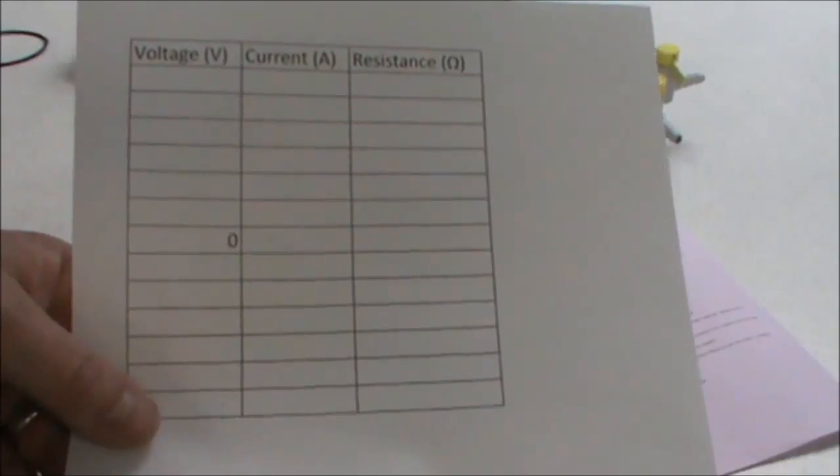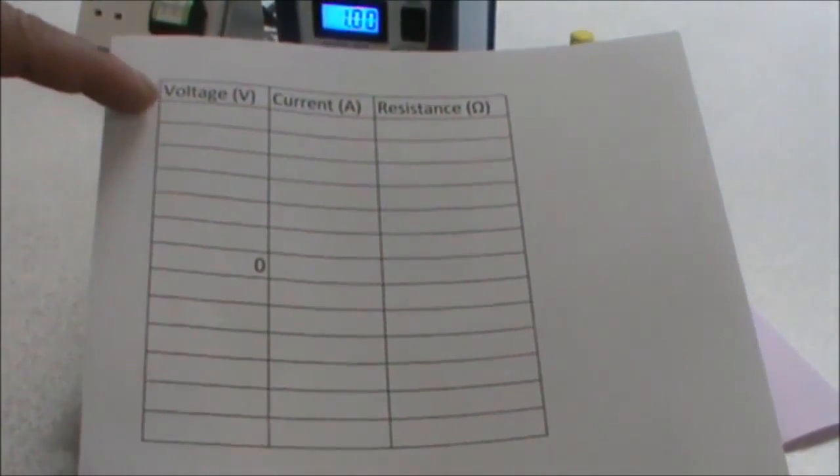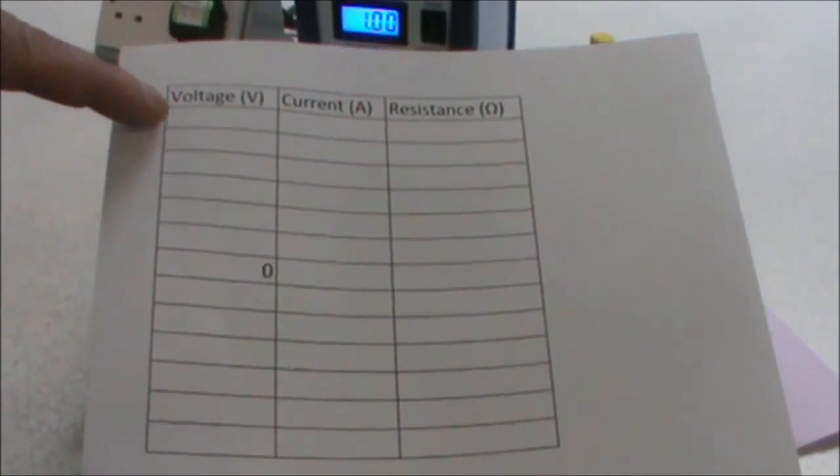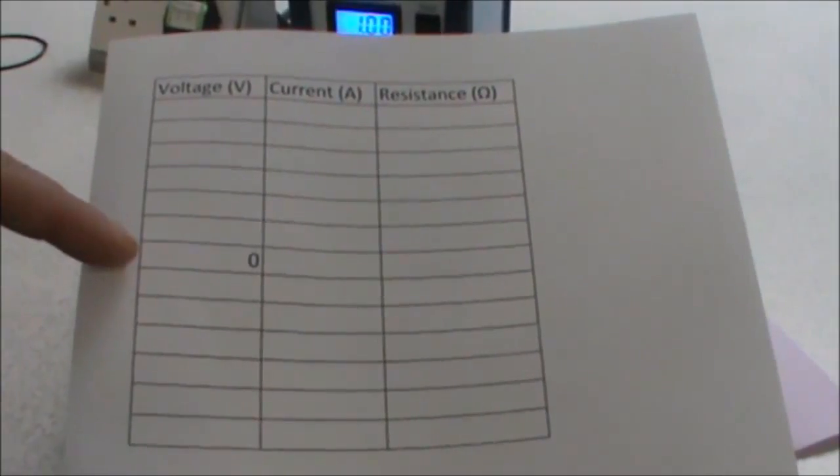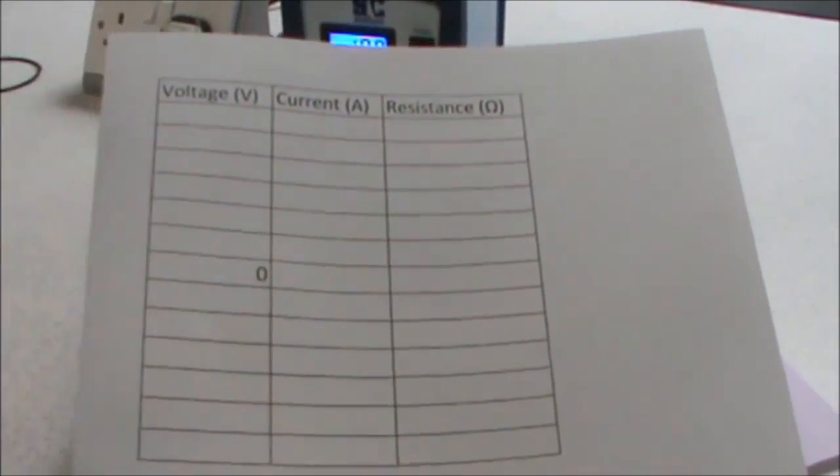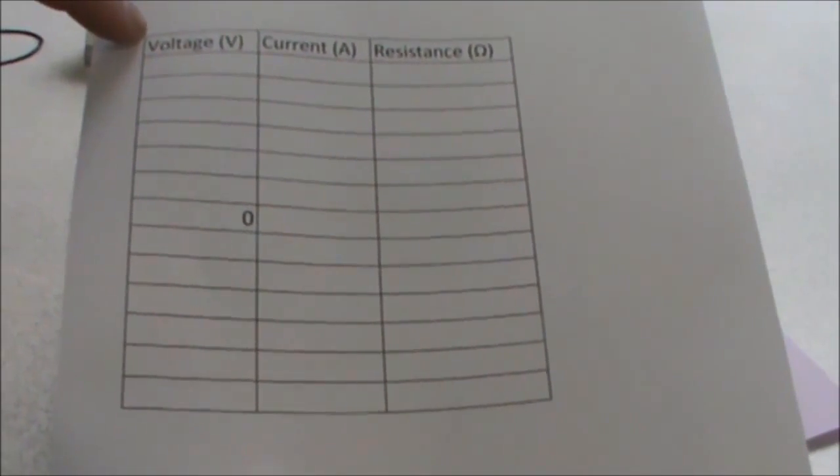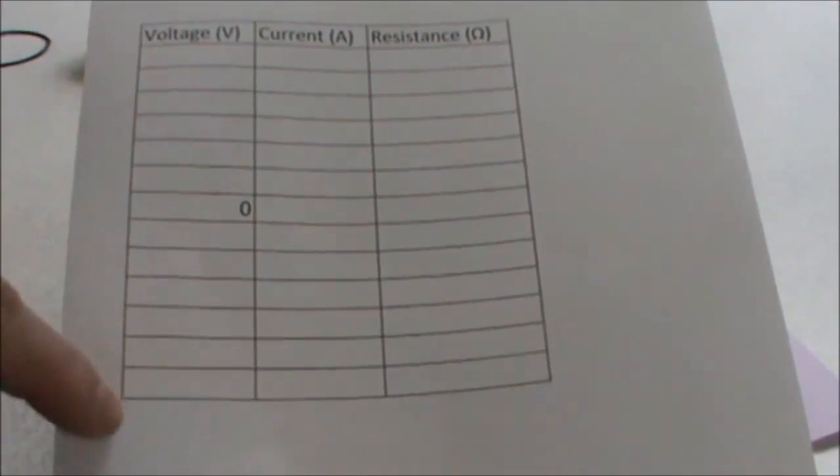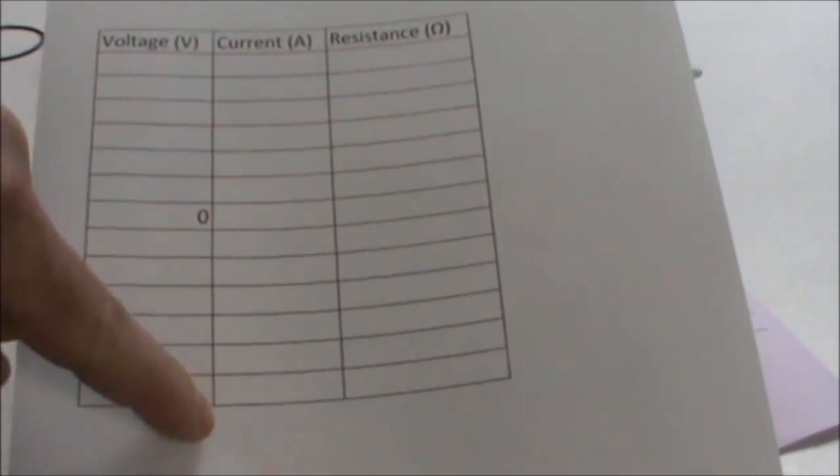I have here a pre-prepared results table that will allow me to record the voltage. I'm going to go from negative six volts to positive six volts with a zero voltage reading. I will record the current, and I will then calculate the resistance. Remember, the voltage as it is in the first column is my independent variable. My current, the one that I am measuring, is the dependent variable.